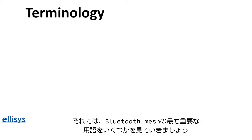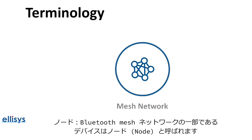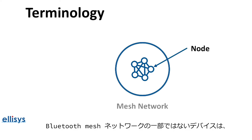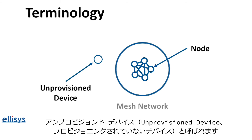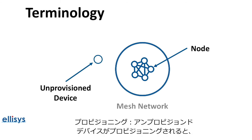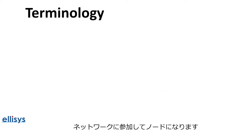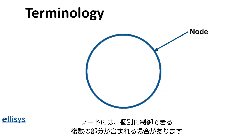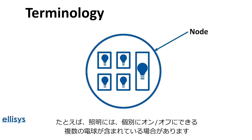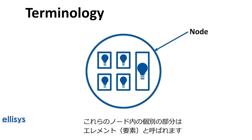Devices that are part of a Bluetooth Mesh network are called nodes, and devices that are not part of the network are called unprovisioned devices. Once an unprovisioned device gets provisioned, it joins the network and becomes a node. A node may contain multiple parts which can be controlled independently — for example, a light fixture may contain multiple light bulbs which can be turned on or off independently. These different parts are referred to as elements.